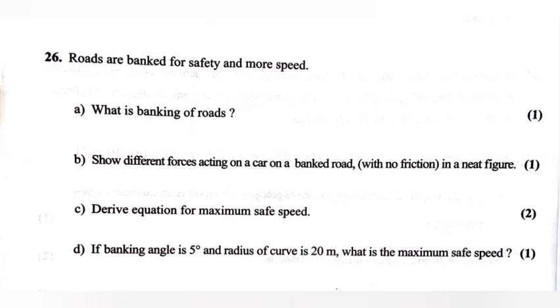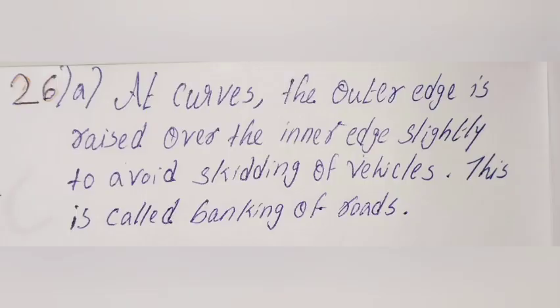Question 26: Roads are banked for safety and higher speed. Part a: What is banking of roads? Answer: At curves, the outer edge is raised over the inner edge slightly to avoid skidding of vehicles. This is called banking of roads.